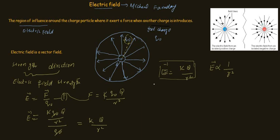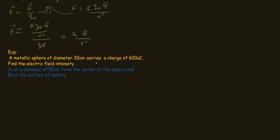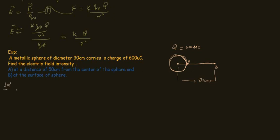To understand electric field intensity, consider an example: a metallic sphere of diameter 30 centimeters carries a charge of 600 microcoulombs. We need to find the electric field intensity at point A, at the surface of the sphere, and at point B, at a distance of 50 centimeters from the center of the sphere.